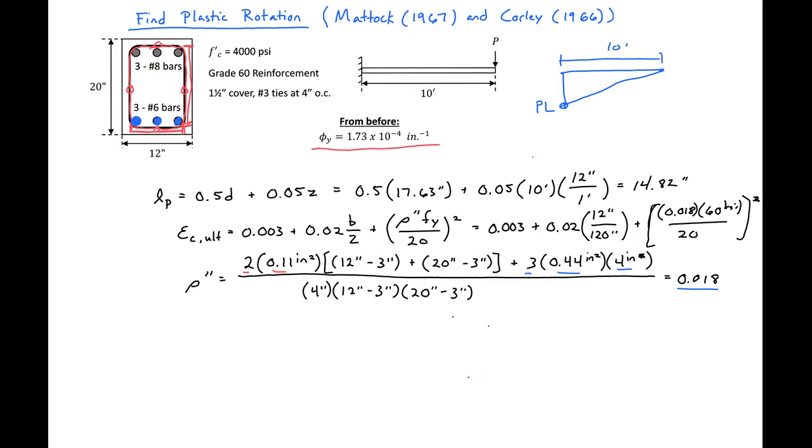And this will give us an epsilon C ultimate equal to 7.91 times 10 to the negative third.